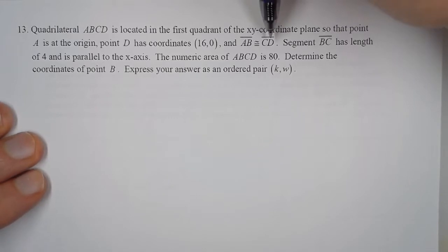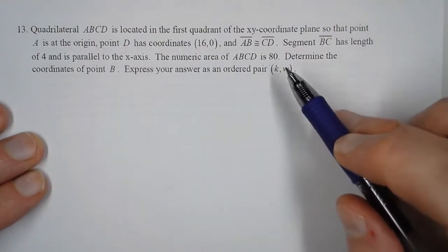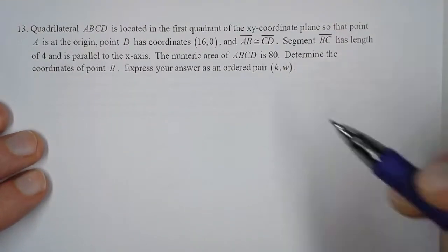and AB and CD are congruent. Segment BC has a length of 4 and is parallel to the x-axis. The numeric area of ABCD is 80, so we want to determine the coordinates of point B and express it as the ordered pair (K, W).